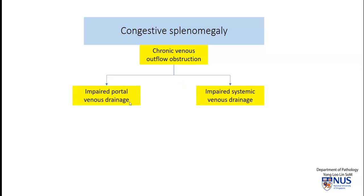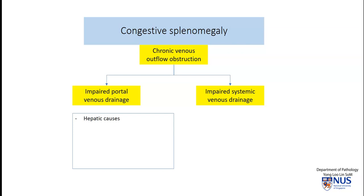This could either be affecting the portal veins or the portal venous system or the systemic venous drainage. In the portal venous drainage, very often the causes are actually hepatic in nature. So if there's any chronic condition that causes disruption of the liver architecture — for example, cirrhosis or infections like in schistosomiasis where there's pipe stem fibrosis — this can distort the hepatic vasculature, giving rise to portal hypertension.